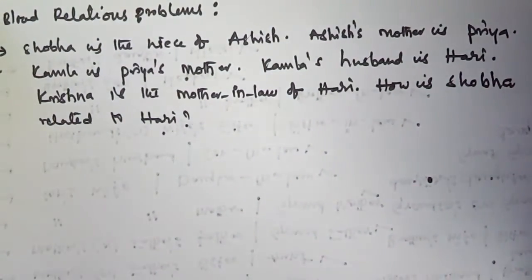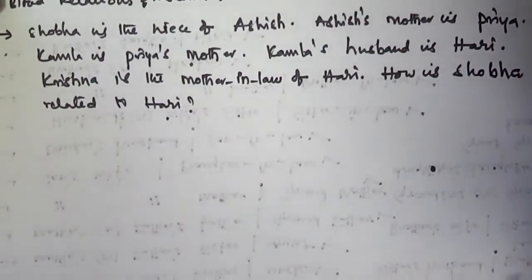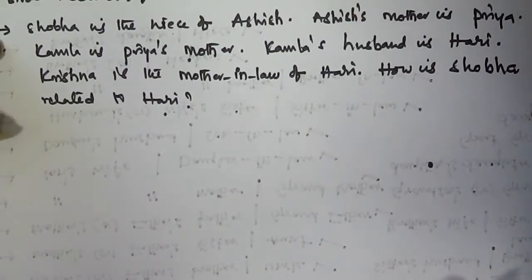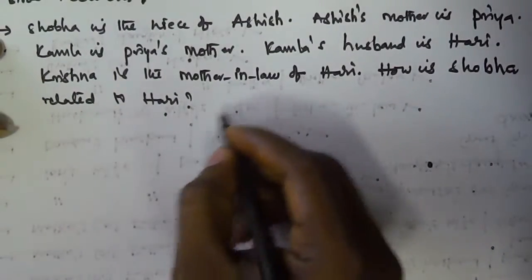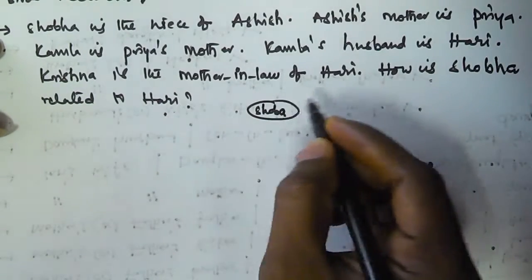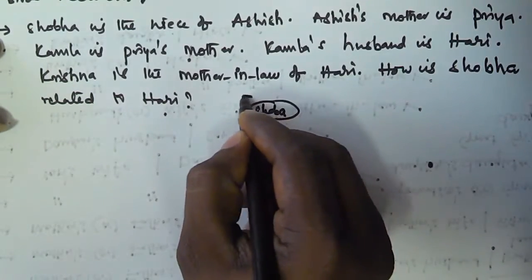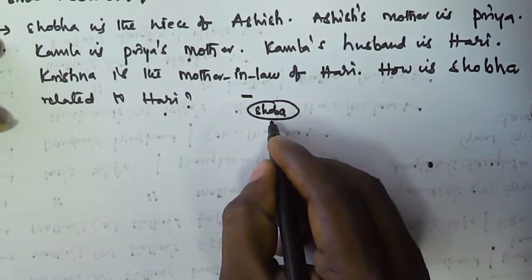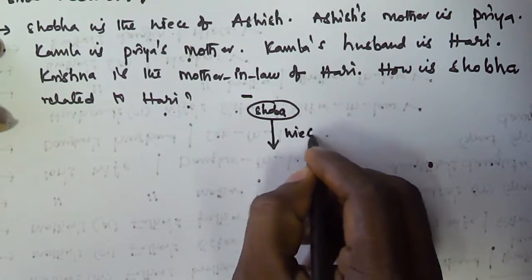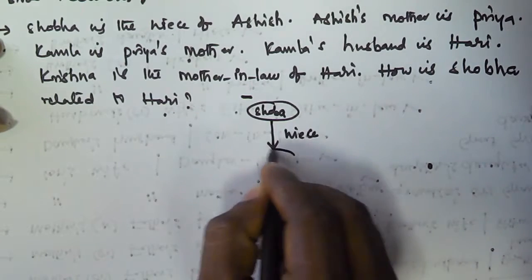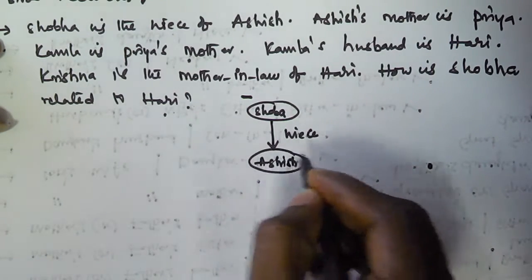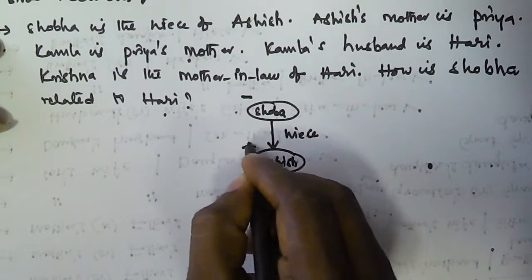This is the question: how is Shobha related to Hari? It is given that Shobha is the niece of Ashish. Here we have Shobha, and she is a female, so I am using a negative sign here. She is the niece of Ashish. Ashish is a male, so I am using a positive sign here.